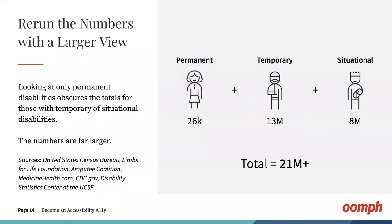At any given point, the number of people who would benefit from an inclusive website is far greater than we might expect. The number of Americans who have only one arm is about 26,000 out of roughly 327 million. But add 13 million people who break an arm every year, and 8 million new parents holding newborns, and you have about 21 million people — or 12% — who might need to use your website with only one hand at any given time. Multiply that by your average customer value and you might arrive at a staggering number.